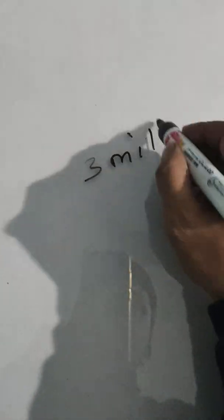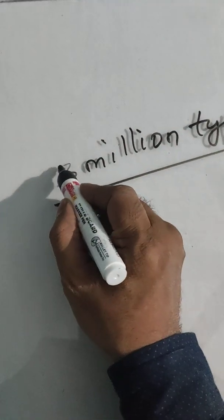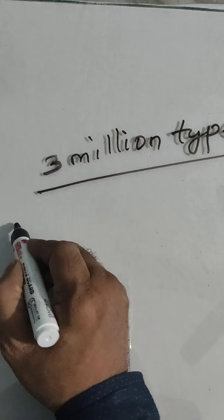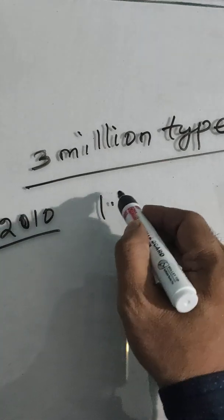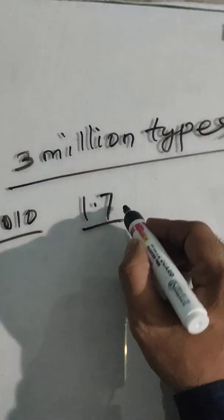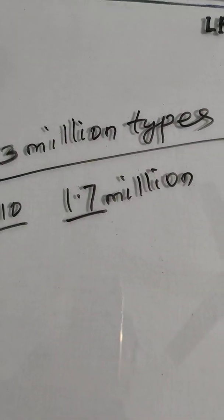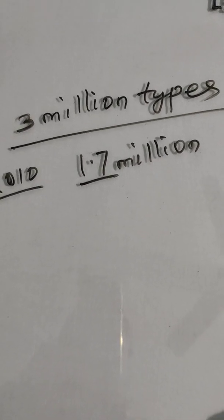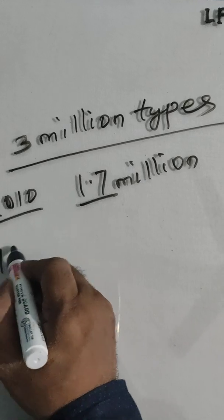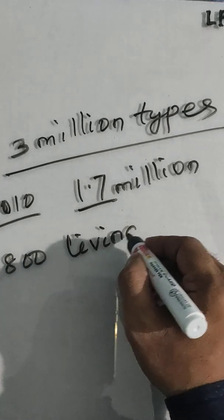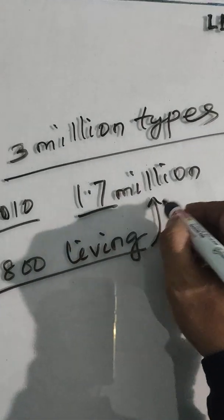As we know, in the present time there are about three million types of living organisms, which have been scientifically included in the taxonomic system. By 2010, there were about 1.7 million types of organisms included within the taxonomic system. In recent times, on average 1,800 living organisms are officially added per annum.